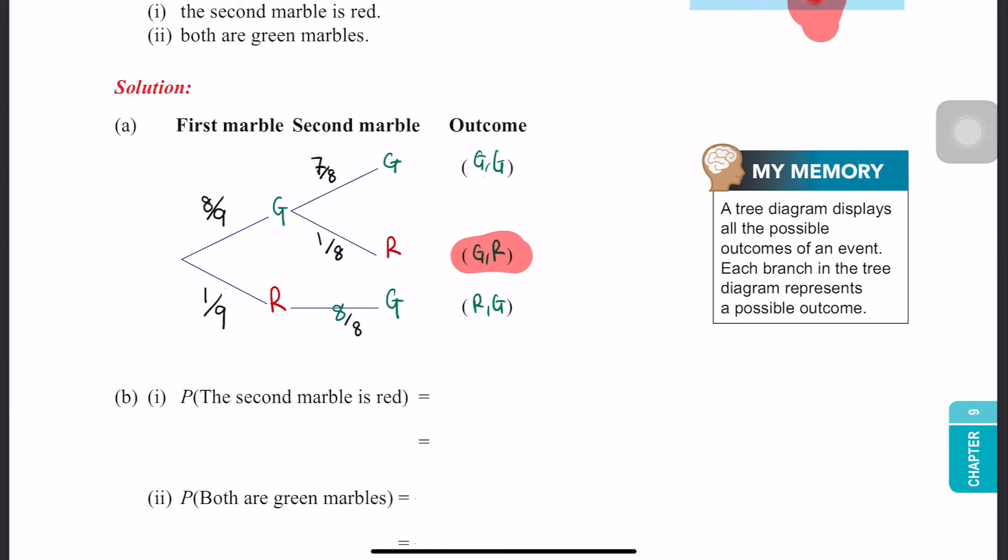So now we look at its path. To get GR, we will go through this, right? Look at this. That's the path. This is the way of getting a second marble that is red.